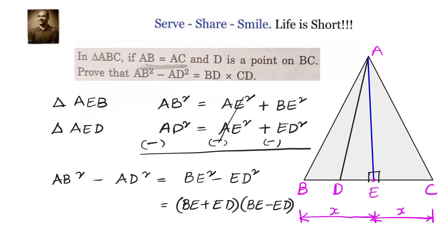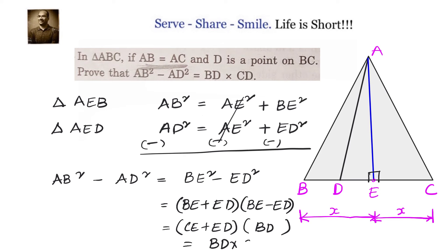Now, BE plus ED: since BE equals CE, we write it as CE plus ED, which gives us CD. And BE minus ED gives us BD. So AB squared minus AD squared equals BD into CD.